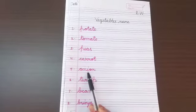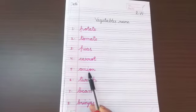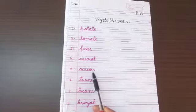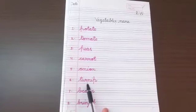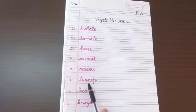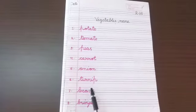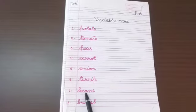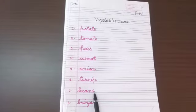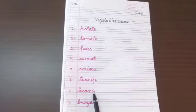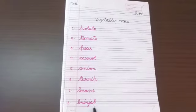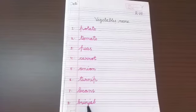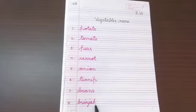Onion — O-N-I-O-N — Onion. Turnip — T-U-R-N-I-P — Turnip. Beans — B-E-A-N-S — Beans. Brinjal — B-R-I-N-J-A-L — Brinjal.